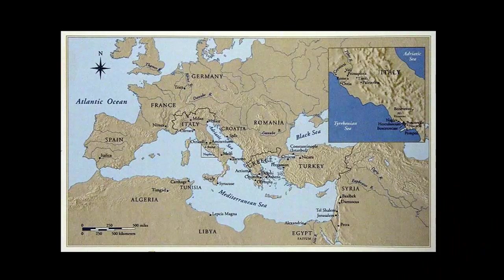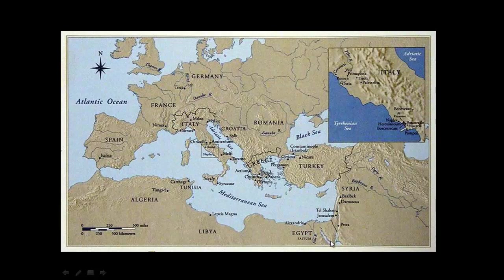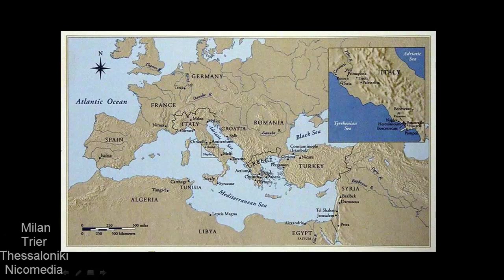Starting with a map, we'll be talking about things in the city of Rome but also the city of Constantinople. One monument we'll be looking at comes from Egypt, found at a monastery in Mount Sinai near the Red Sea. Last lecture I ended with ancient Rome by talking about the tetrarchy — when Diocletian divided the Empire, there were four capital cities: Milan, Trier, Thessaloniki, and Nicomedia. After discussing Constantine's monuments in Rome, we'll move into the Eastern Roman Empire, what we now call the Byzantine Empire.